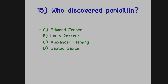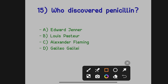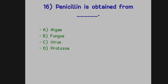Who discovered penicillin? Option A: Edward Jenner. Option B: Louis Pasteur. Option C: Alexander Fleming. Option D: Galileo. The correct answer is Option C, Alexander Fleming — he discovered penicillin.